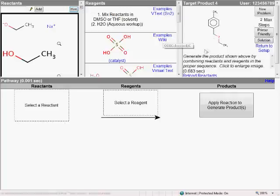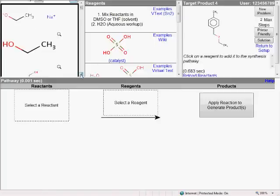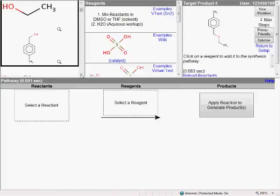Looking at the product, I'm thinking a Williamson ether synthesis by an SN2 substitution. However, looking at our available reactants, none of them has a decent leaving group to facilitate such a substitution. So the first thing we're going to need to do is to convert one of these alcohols into a good leaving group.